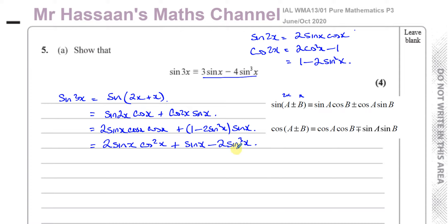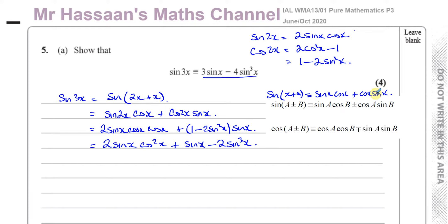Some of you might not understand where these come from — they're not in the formula book but you should know them. If you forget, you can derive them. For sine 2x, write it as sine of x plus x, which gives sine x cosine x plus cosine x sine x. These two are the same thing, so that gives you 2 sine x cosine x. That's where this formula comes from.